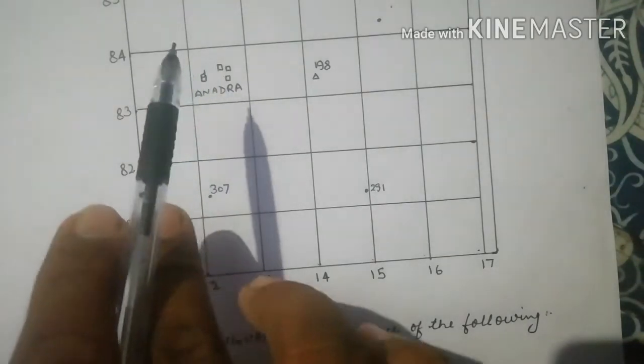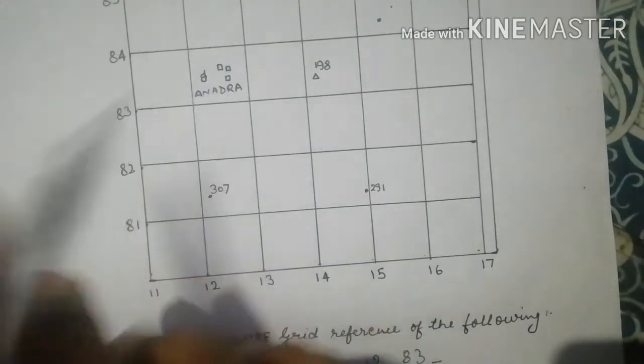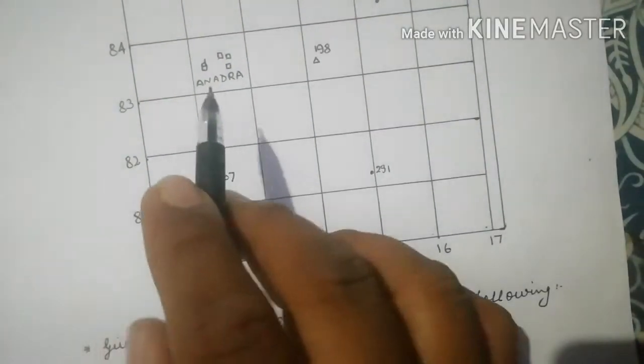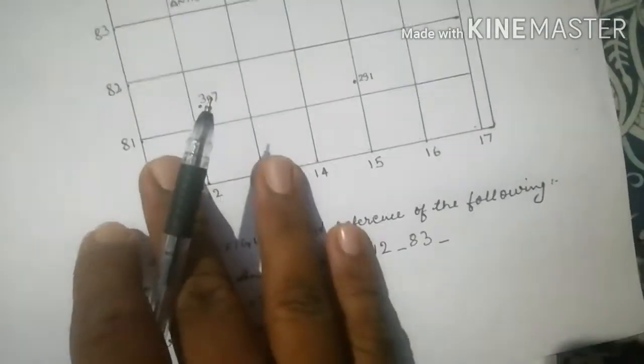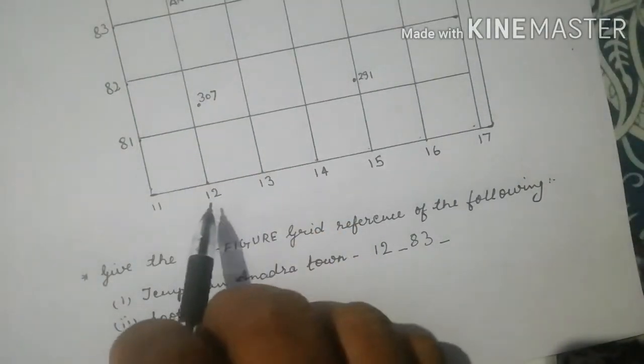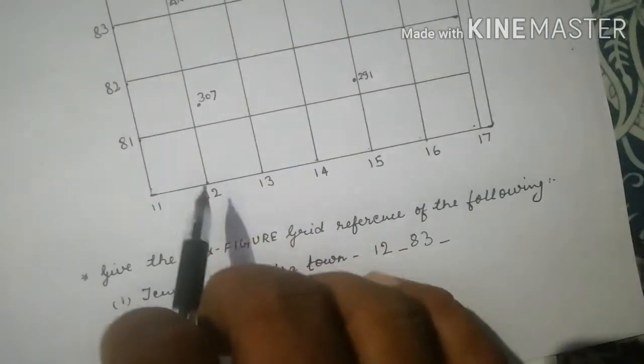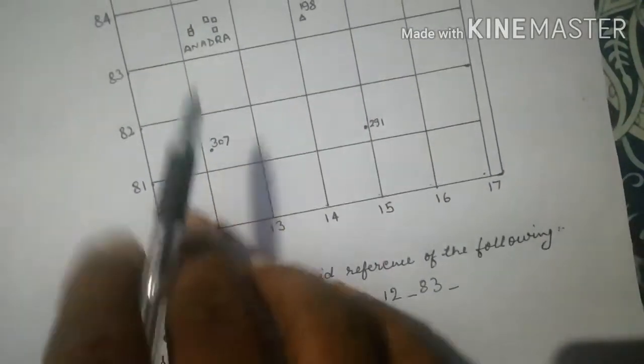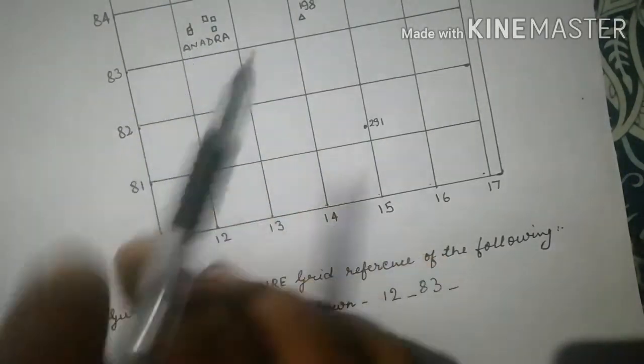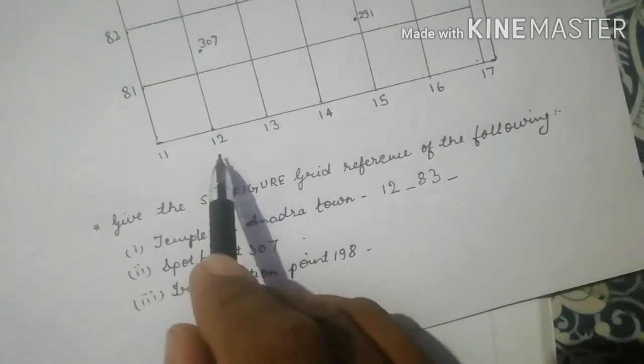In a simpler manner, between which two vertical lines does this temple lie? The two vertical lines, the value of those eastings, is 12 and 13, or one-two and one-three. The one which has the lesser value we need to write down first, so the lesser value is 12.